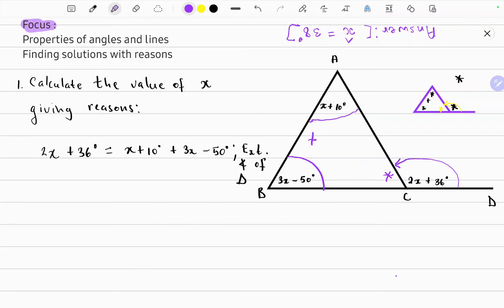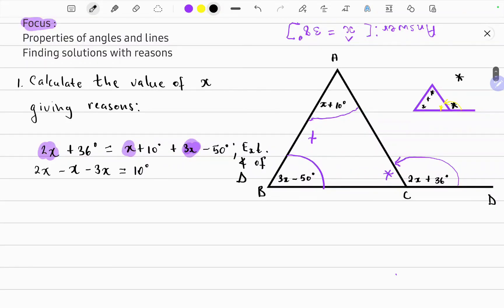So now we can collect like terms and solve on the left hand side. So it's 2x minus x minus 3x equals 10 degrees minus 50 degrees minus 36 degrees. So on the left hand side you should get negative 2x and on the right hand side is minus 76 degrees.